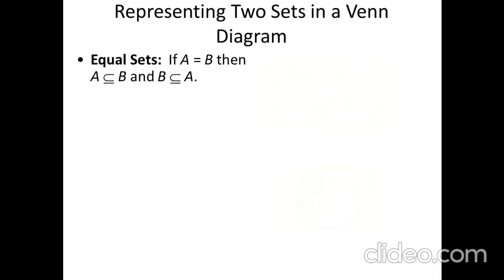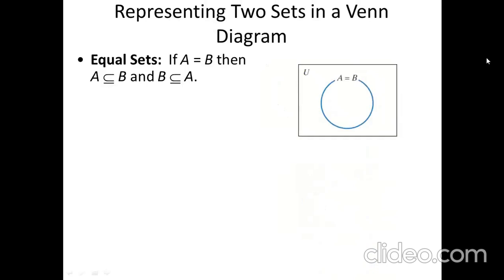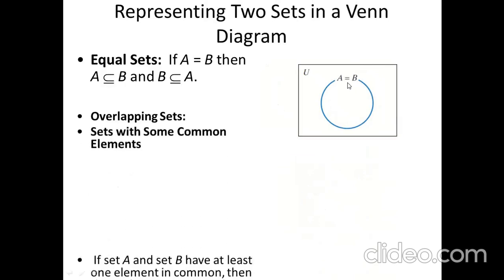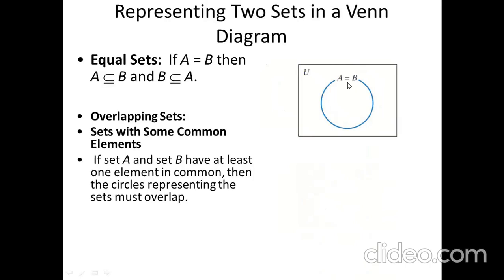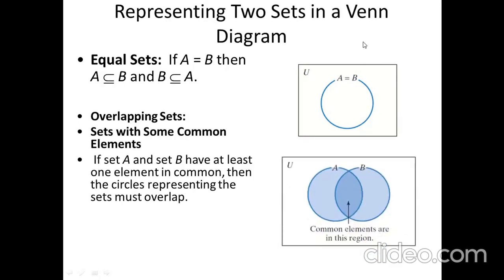For equal sets: if two sets are equal, we represent them in a Venn diagram with just a single circle, writing A = B. For overlapping sets with some common elements — if set A and set B have at least one element in common — the circles representing the sets must overlap. The overlapping portion shows the common elements between the two sets, and we write those common elements in the overlapping part.